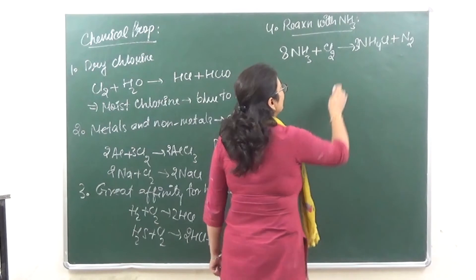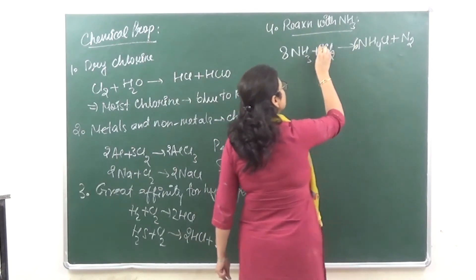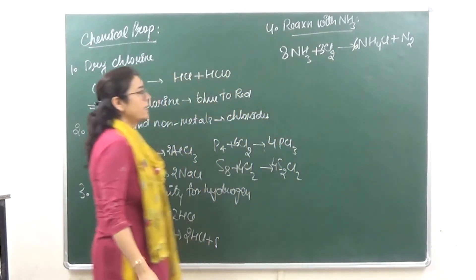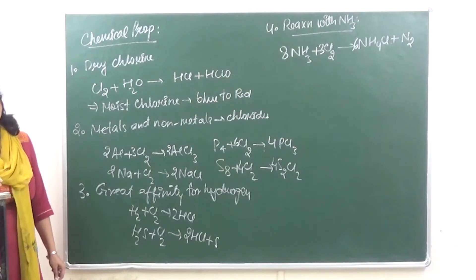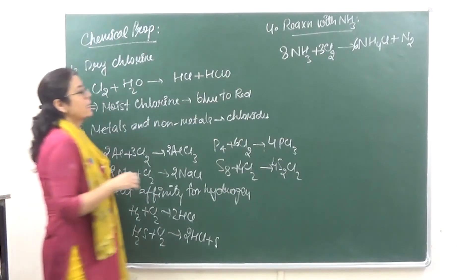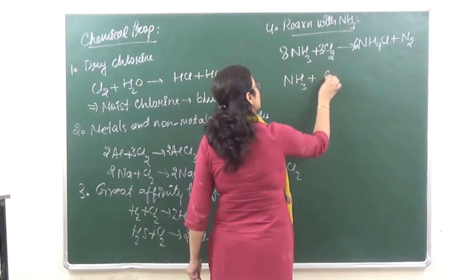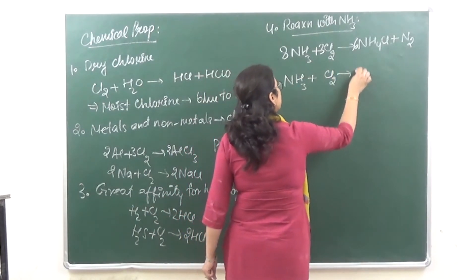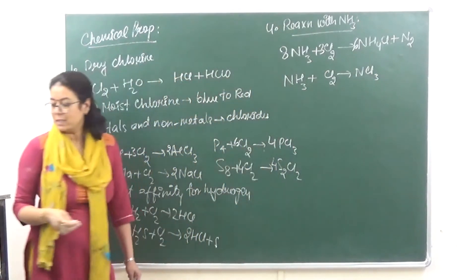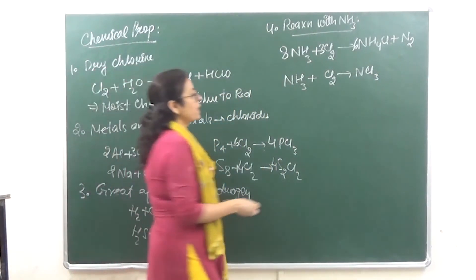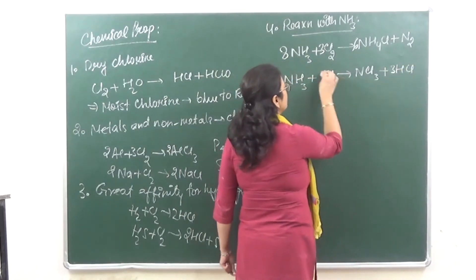Balance the equation — the ratio is 8:6:3. And if we take excess of chlorine, then NCl3 is formed. Excess of chlorine: NH3 plus Cl2 gives the main product NCl3, along with dense white fumes of hydrochloric acid. This reaction is very important from your examination point of view.